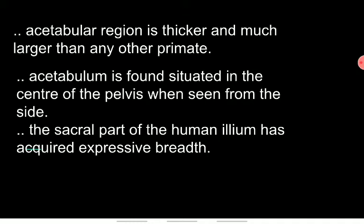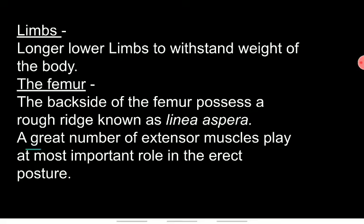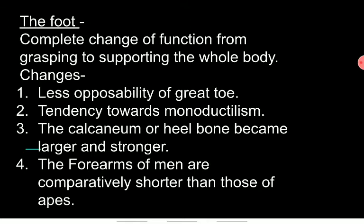The femur bone is longer and stronger — this is also a major change. On the back side of the femur there are rough ridges called the linea aspera, which is also adapted to the vertical position. These features help the femur support and maintain upright posture.